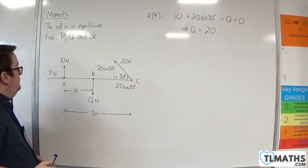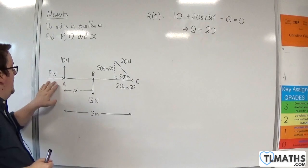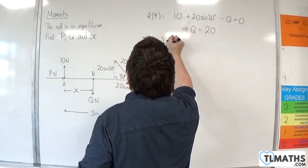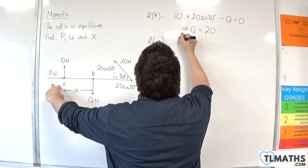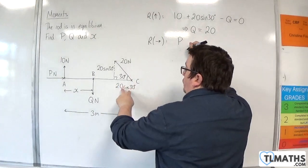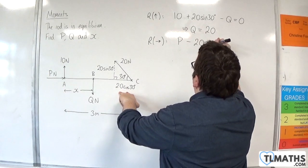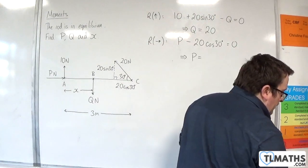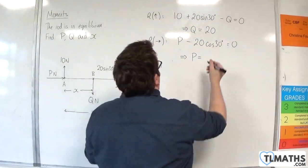Next, to work out P, I'm going to resolve horizontally. I'm going to take to the right as positive. So forces that are acting horizontally, we have P going to the right, and the only other force working horizontally is the 20 cosine 30, the component of the 20 Newton force. So take away 20 cosine 30 is equal to 0. We have 20 times cosine of 30, and so that's 10 root 3.